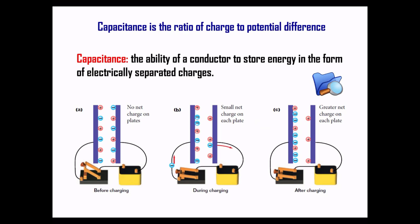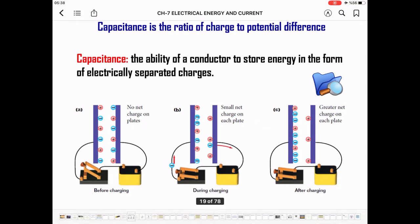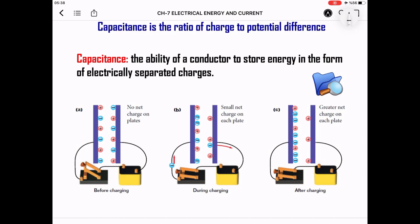Capacitance is the ratio of charge and the potential difference. First of all, what is capacitance? Capacitance is the ability of the conductors to store energy in the form of electrically separated charges. Capacitance is simple — I can explain it like this: it is like a capacity.